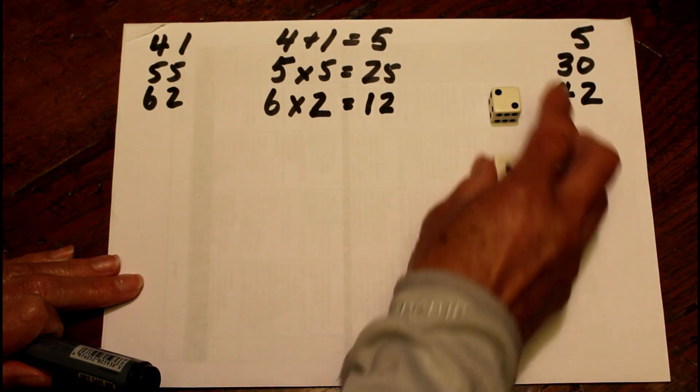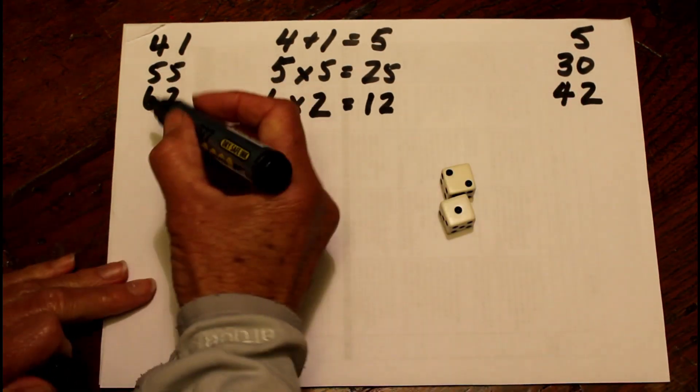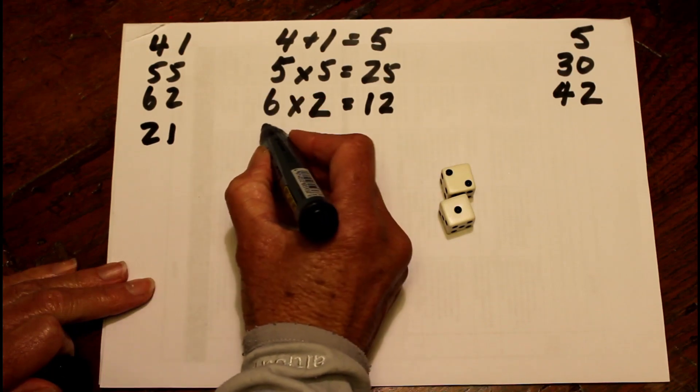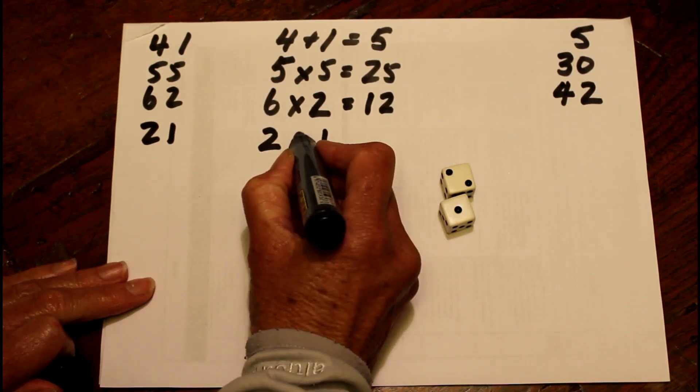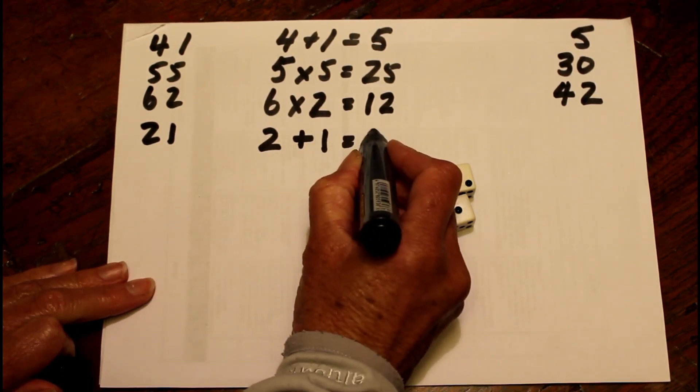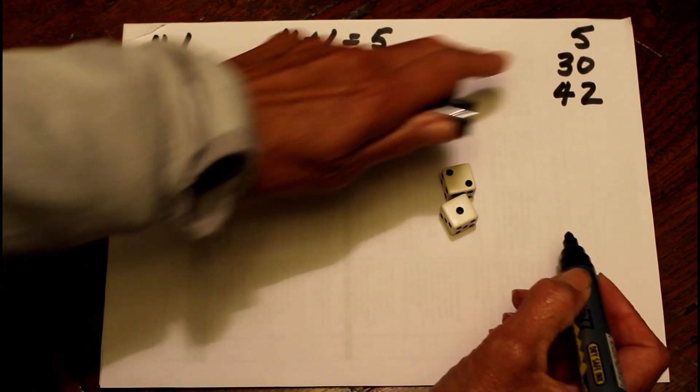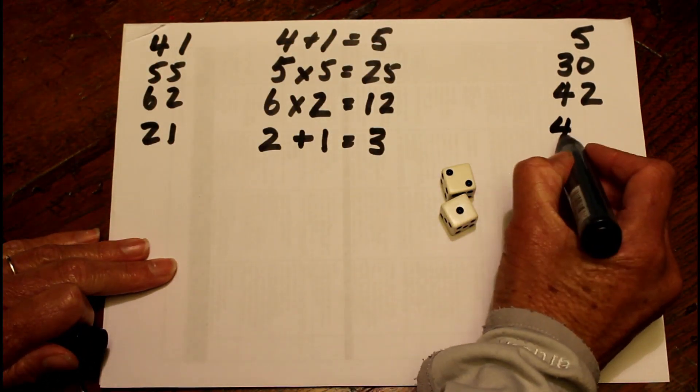Again, I'm going to roll the dice. Now I've got 2 and a 1. I think with my 2 and my 1, I might add them together. I know 2 plus 1 is going to give me 3. 3 plus 42 is going to give me 45.